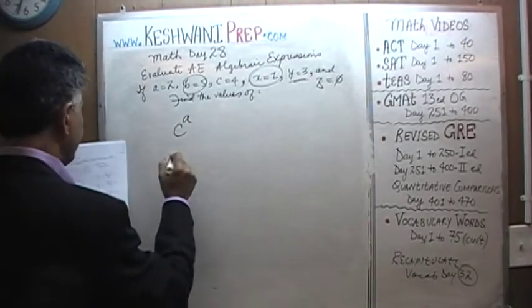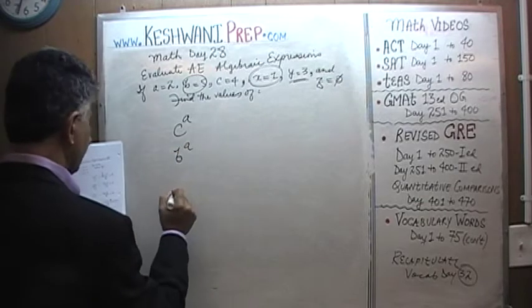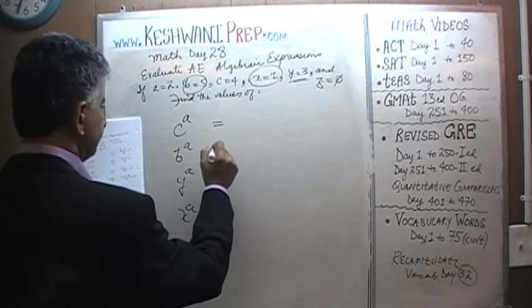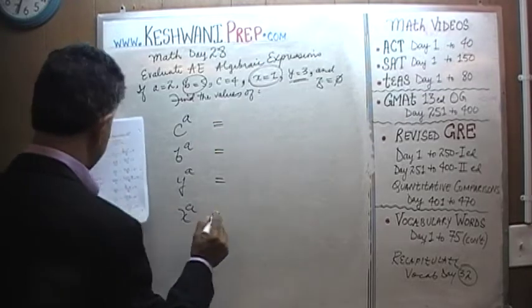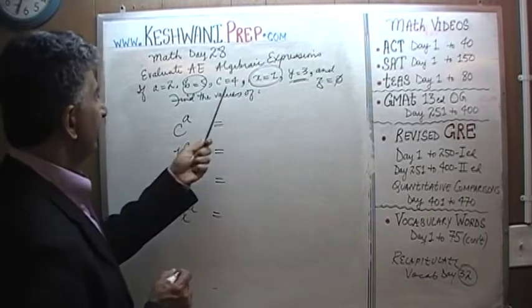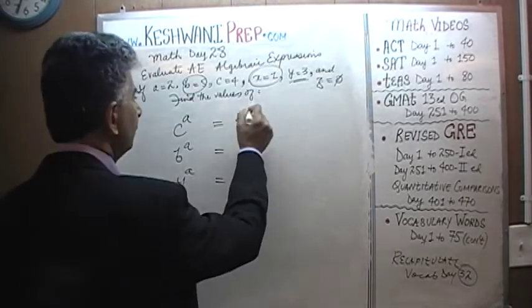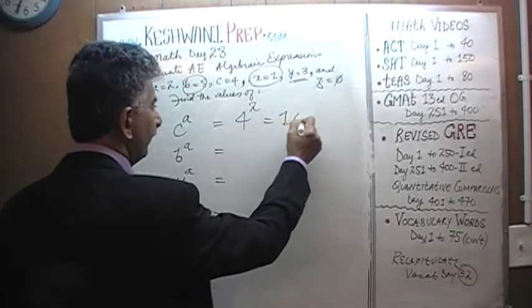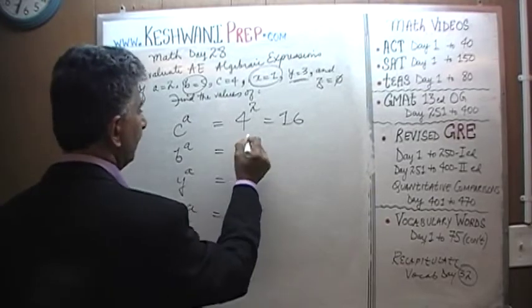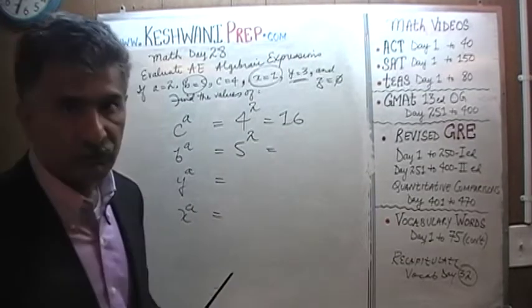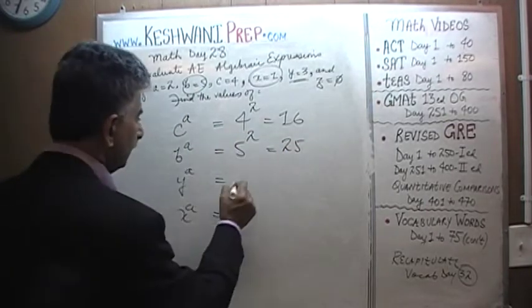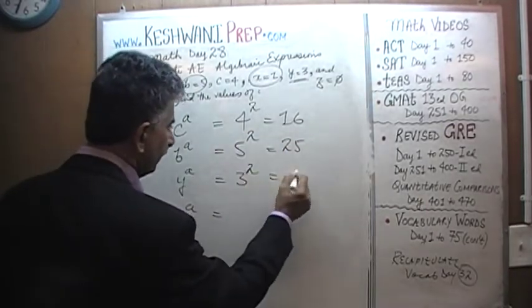C raised to A, B raised to A, Y raised to A, and X raised to A. C raised to A. C is 4, 4 raised to A which is 2, 4 squared is going to be 16. B raised to A. B is 5 raised to A again is 2, 5 squared is going to be 25. And Y. Y is 3, and 3 squared is going to be 9.